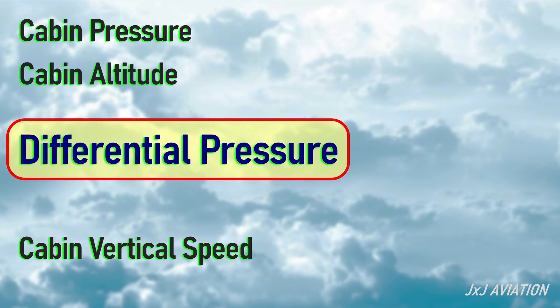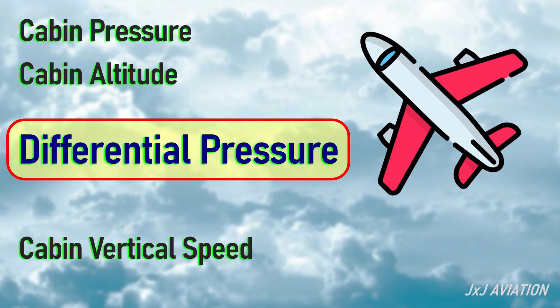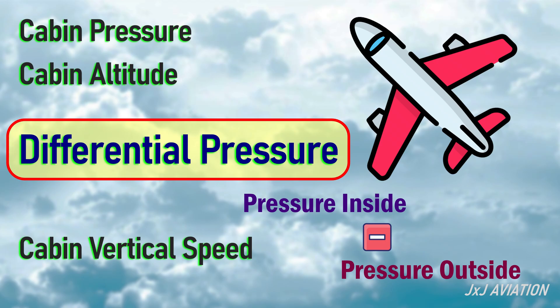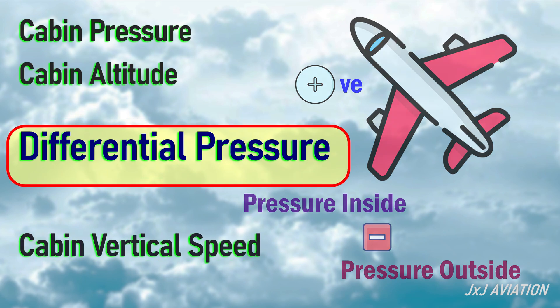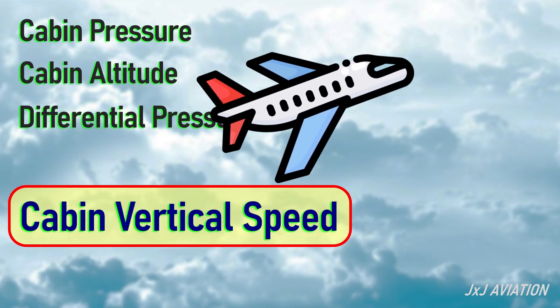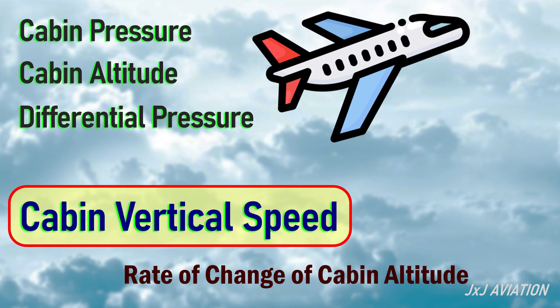Differential pressure is the difference between the pressure maintained inside the aircraft and the outside air pressure. During a normal flight, the differential pressure must be positive, because the cabin pressure must be more than the pressure outside the aircraft. Cabin vertical speed is the rate at which the cabin altitude changes inside an aircraft. This vertical speed can be positive or negative.